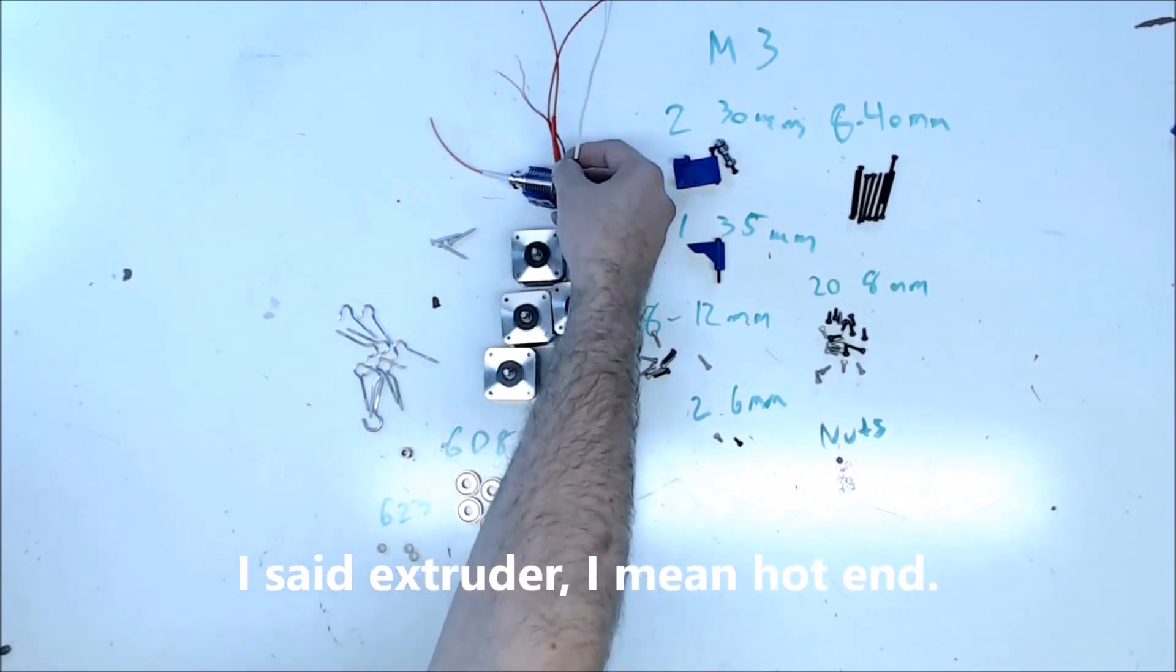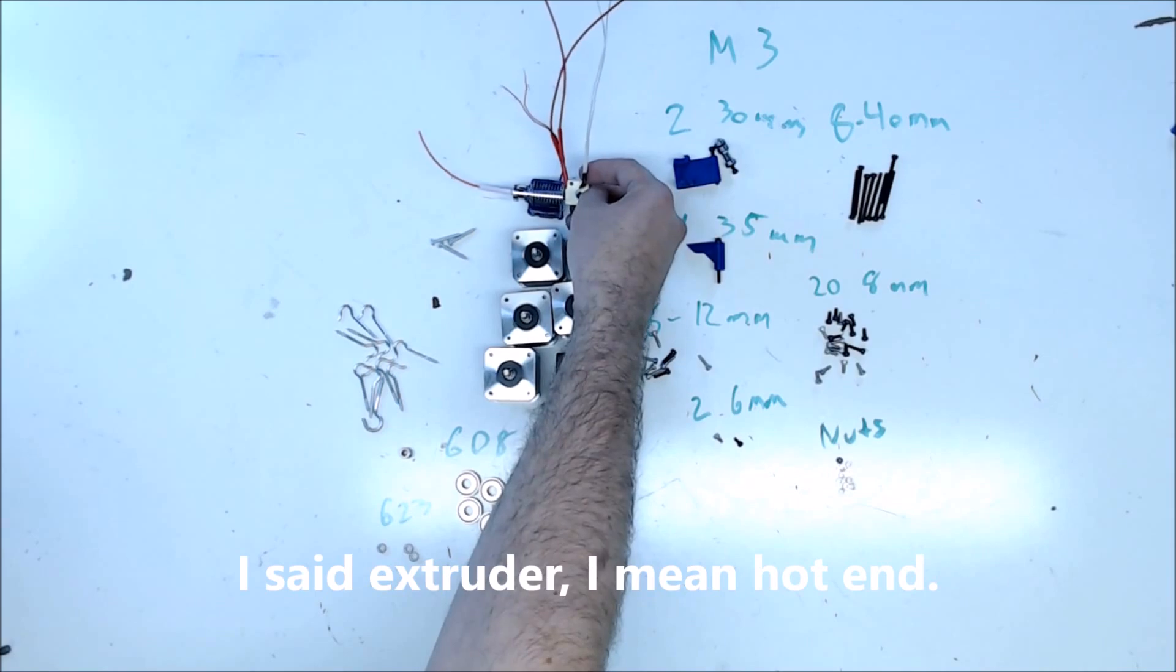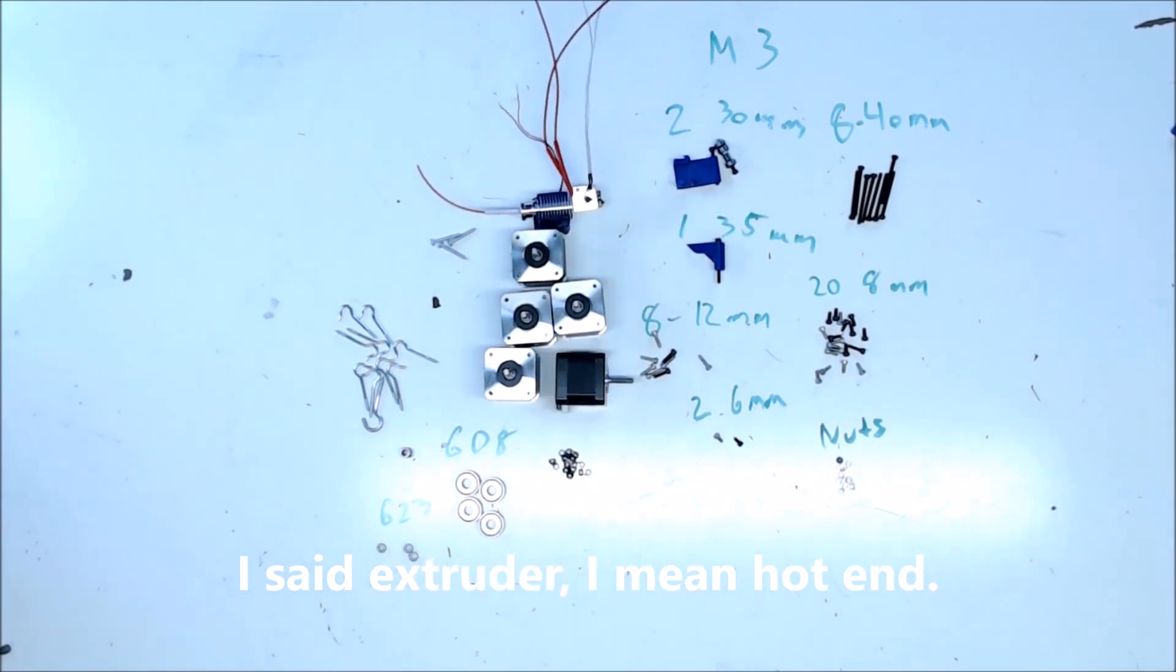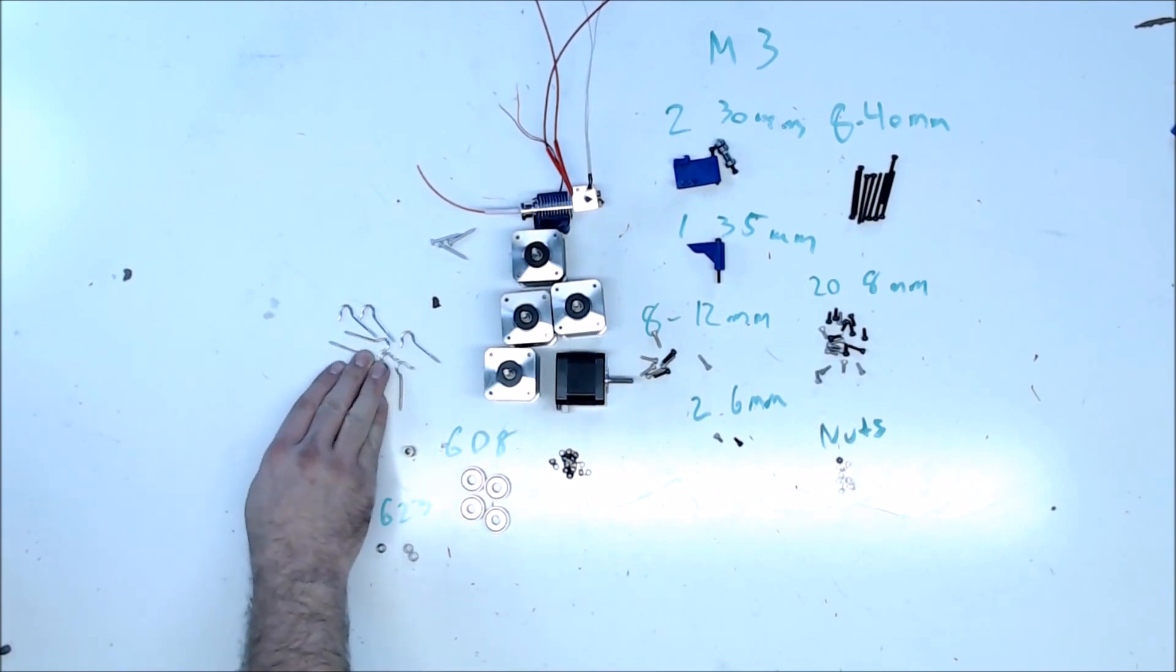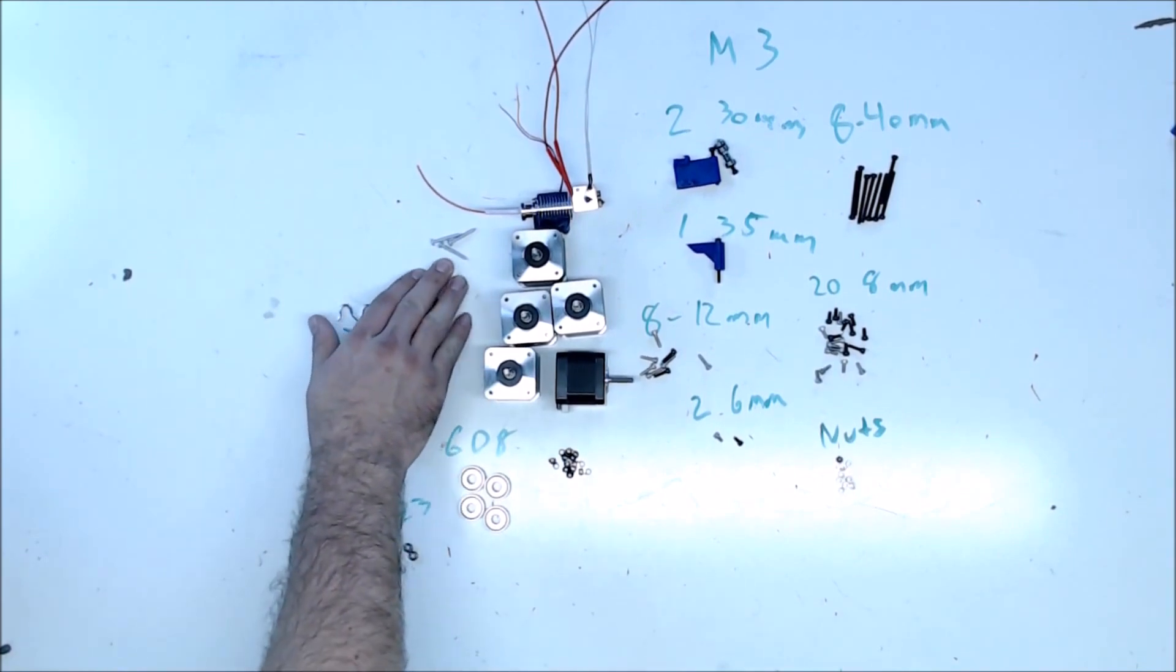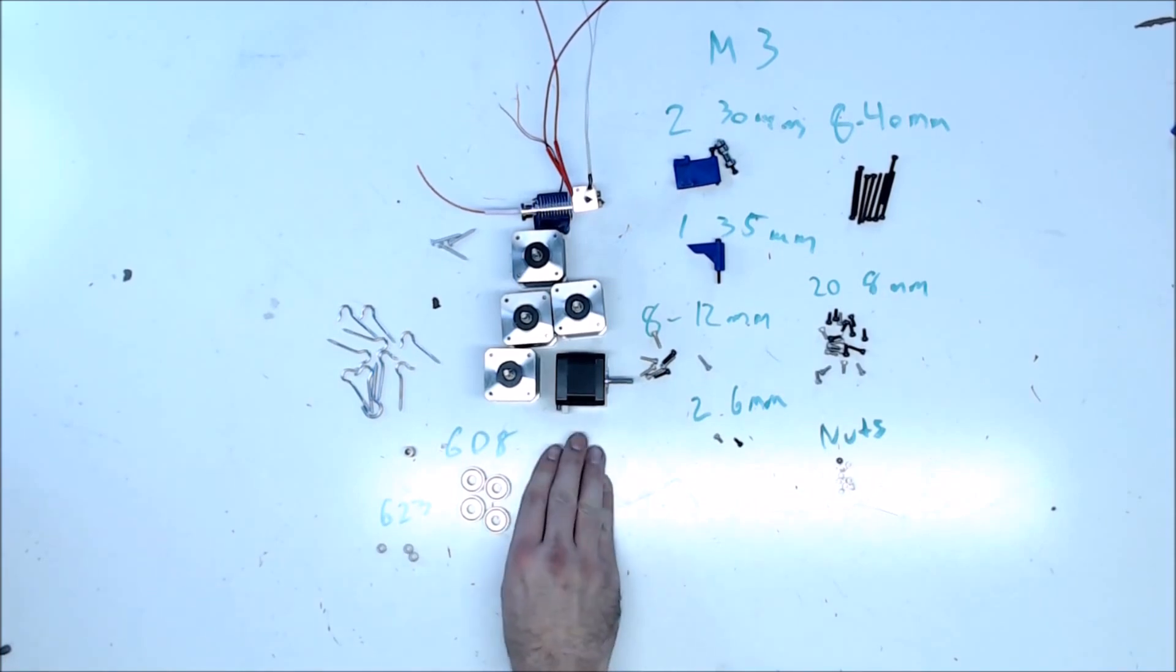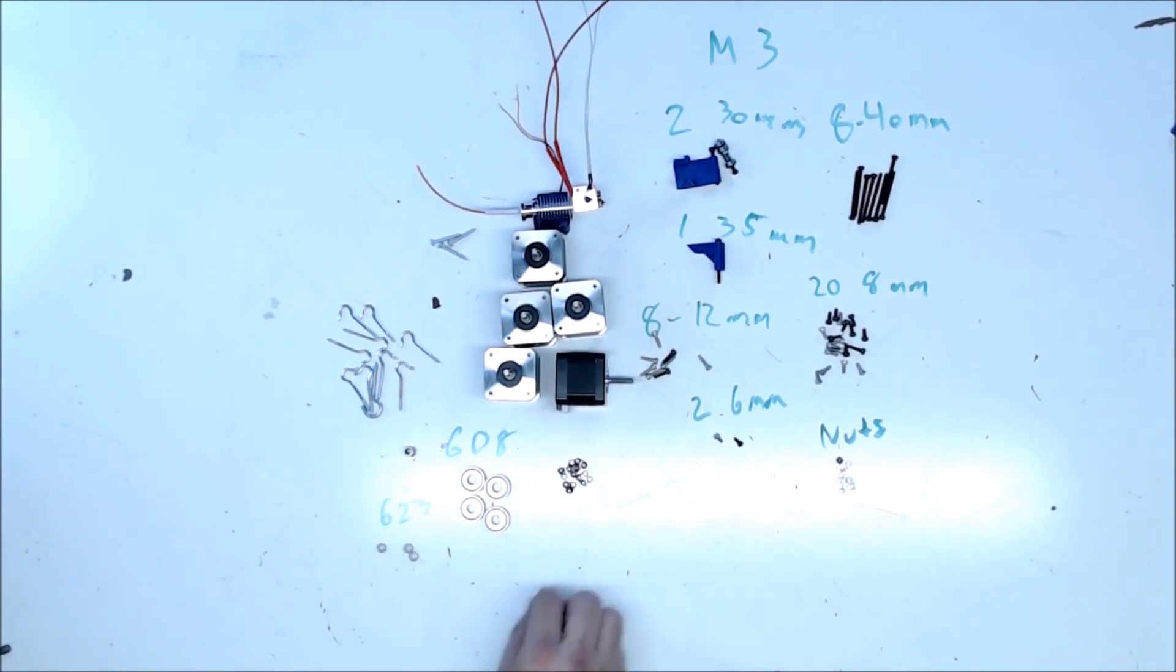You'll need an E3D type extruder. I went with a Volcano clone because it was cheap and it'll print fast. You'll need an MK8 extruder gear, four 608 skate bearings, about 10 wooden screw hooks, some miscellaneous wood screws, and last but not least, about 10 fishing rod rings. These are two millimeter rings, but if you can get 2.7 millimeter, that would be best, but I think 3 millimeter would work as well.